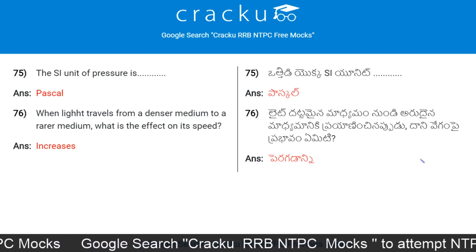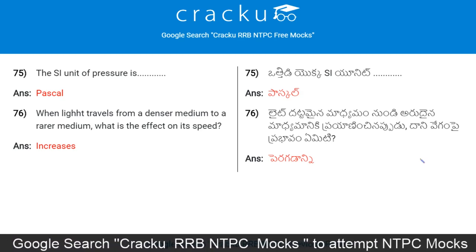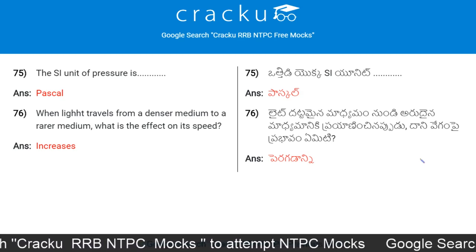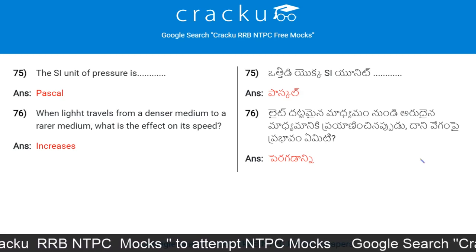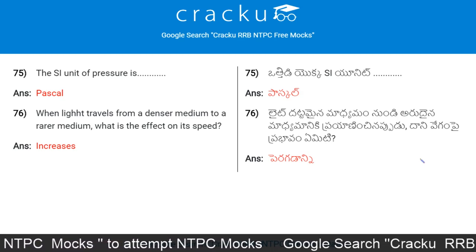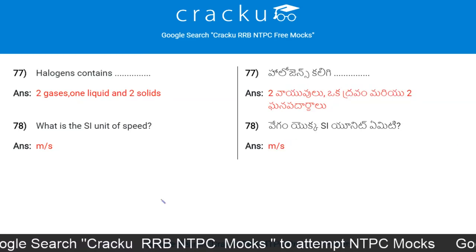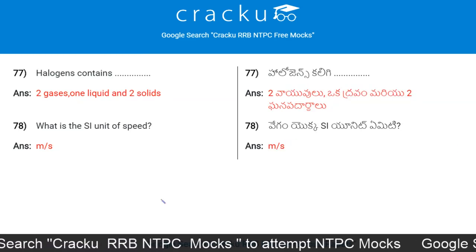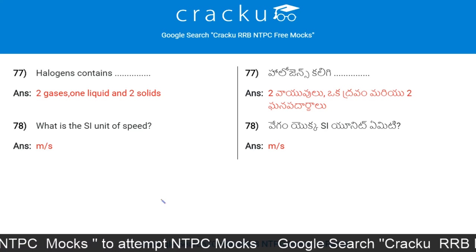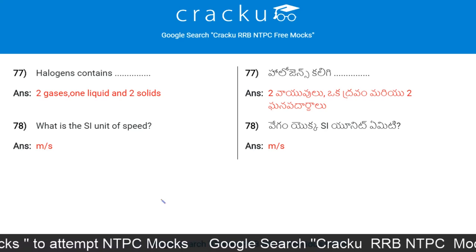When light travels from a denser medium to a rarer medium, its speed increases. Halogens contain two gases, one liquid, and two solids.